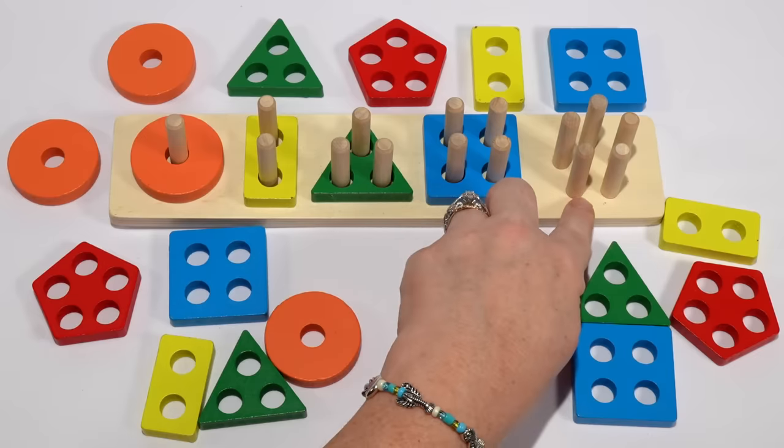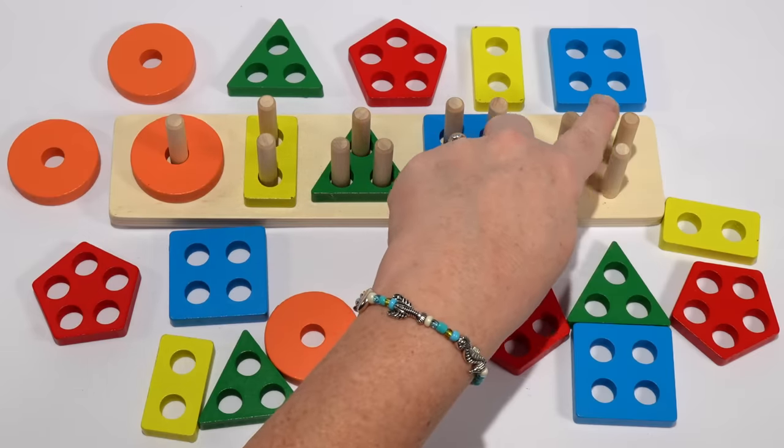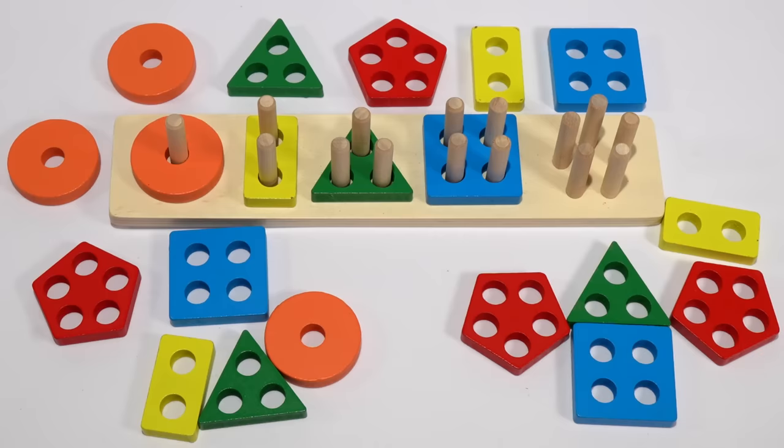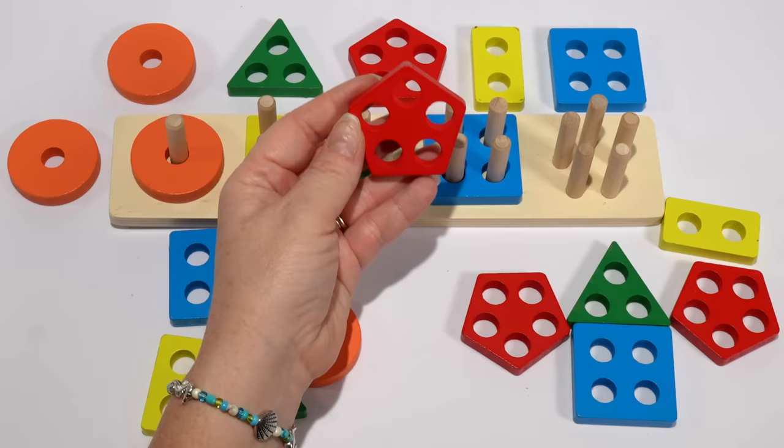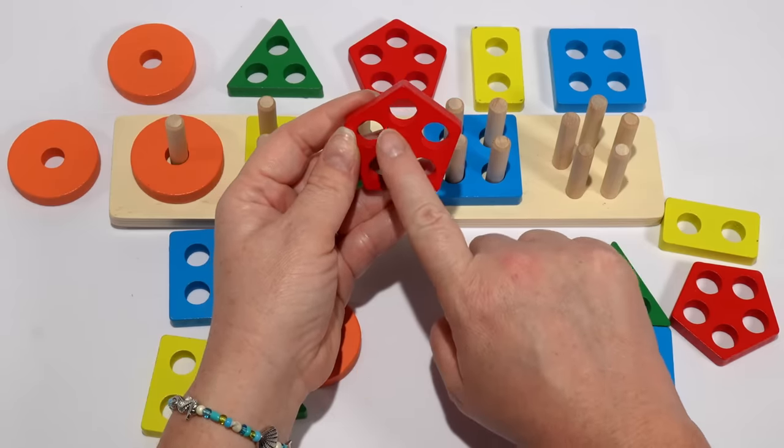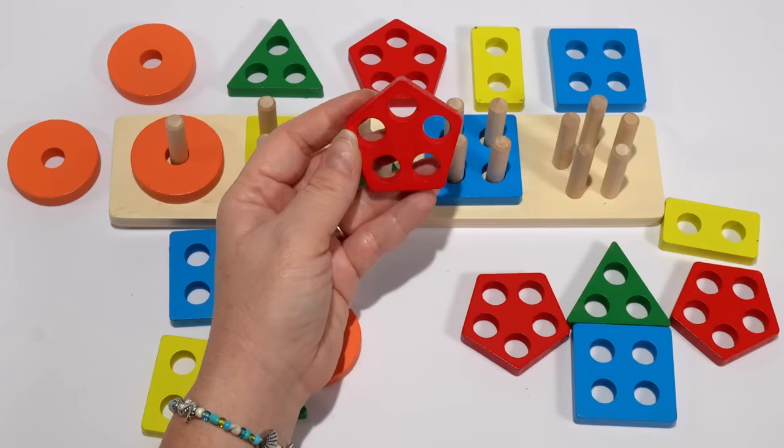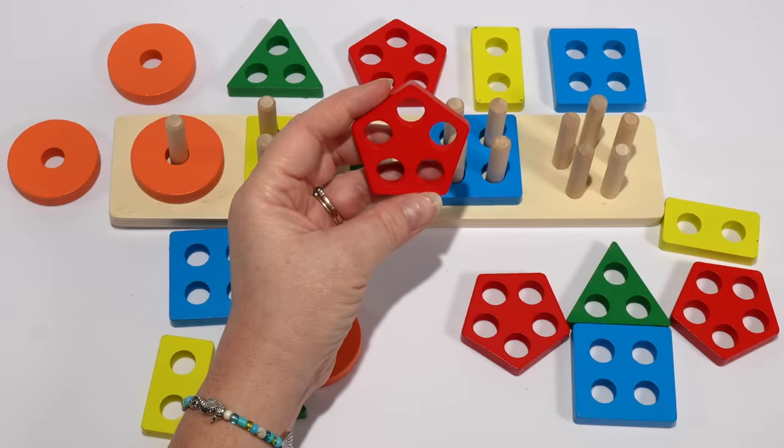Our last set of pegs has one, two, three, four, five. And our pentagon has five holes. One, two, three, four, five. Our pentagon is red.